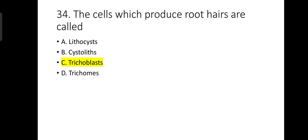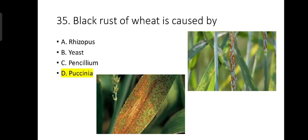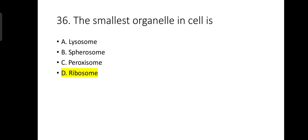Number 34: The cells which produce root hairs are called trichoblasts. Number 35: Black rust of wheat is caused by Puccinia. Number 36: The smallest organelle in the cell is known as the ribosome.